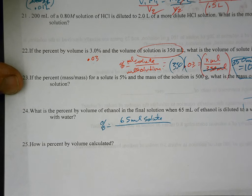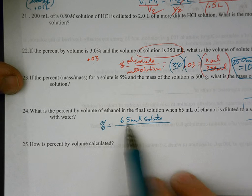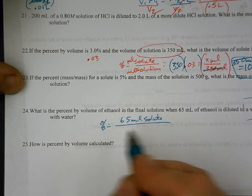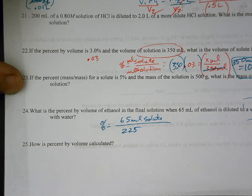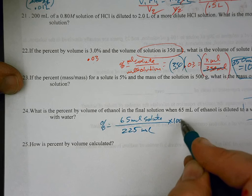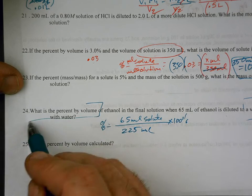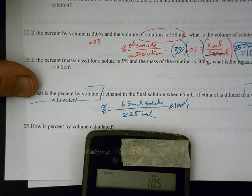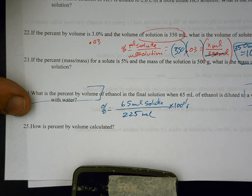That's the new volume. We don't need to add 65 to 225. That is the new volume, 225 milliliters. Then we'll have to multiply that by 100%, because that's what we're looking for, percent by volume.